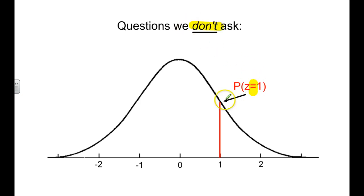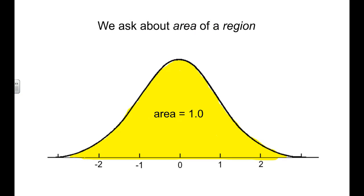We're not going to ask about if something is equal, so we don't ask if the probability is exactly a z-score of 1. Because whenever you have a continuous distribution here, this is an infinitely small slice. So what we're going to instead ask is questions about a region or an area. We're going to say, between these two parts of the curve, what is the area, what is the probability?